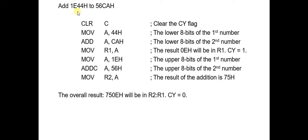Now let's see an example. We want to add two data values. First, we clear the carry using the CLR instruction. Then we move 44h to the accumulator. Next, we ADD CAh to the accumulator data. So 44h plus CAh gives a result of 0Eh with a carry.